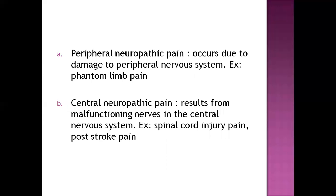Neuropathic pain can be divided into peripheral and central. Peripheral neuropathic pain occurs due to damage to the peripheral nervous system, damage to any part of the extremity — for example, phantom limb pain. Central neuropathic pain results from malfunction of the nerves of the central nervous system; examples include spinal cord injury pain and post-stroke pain.